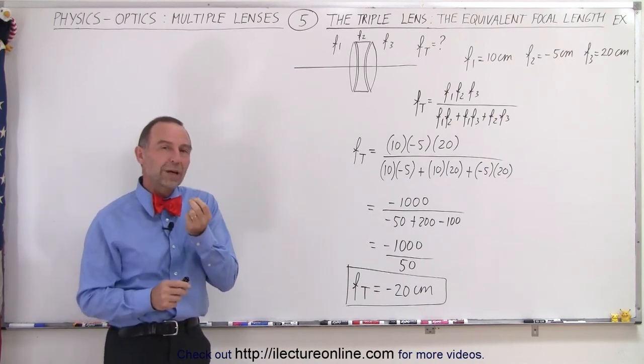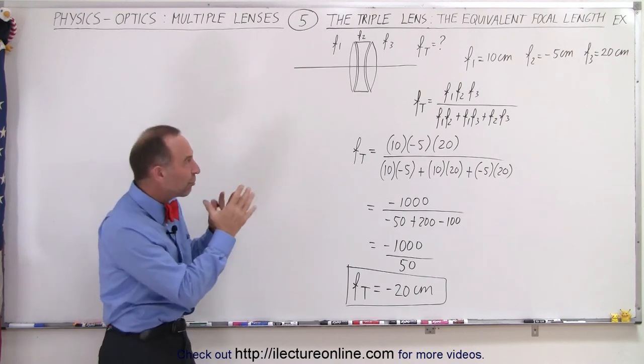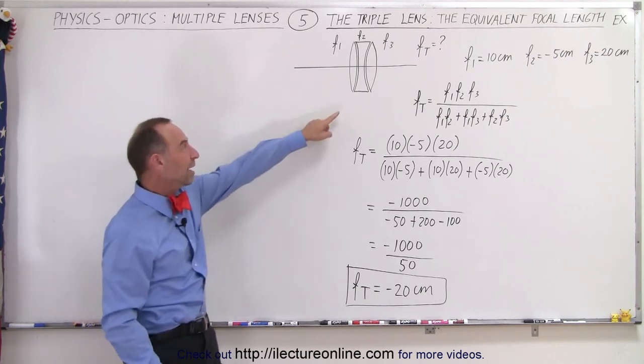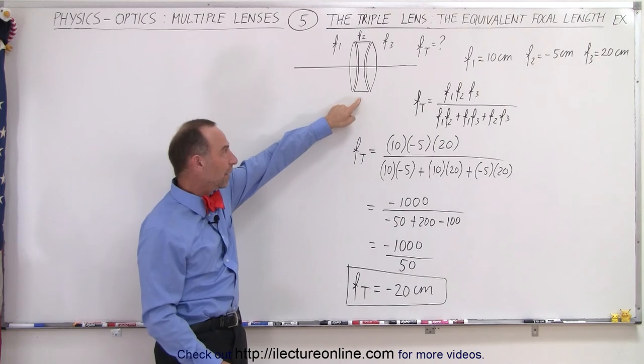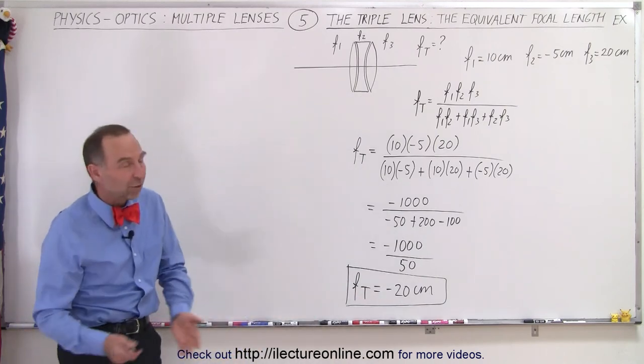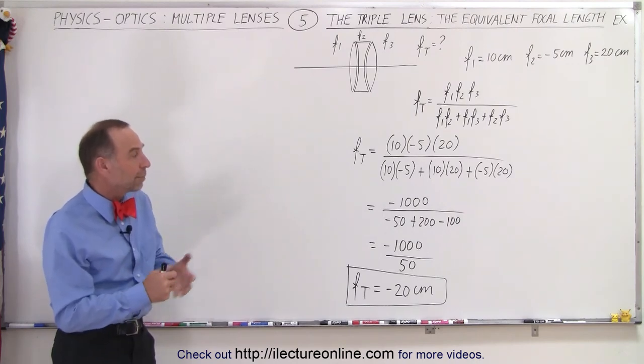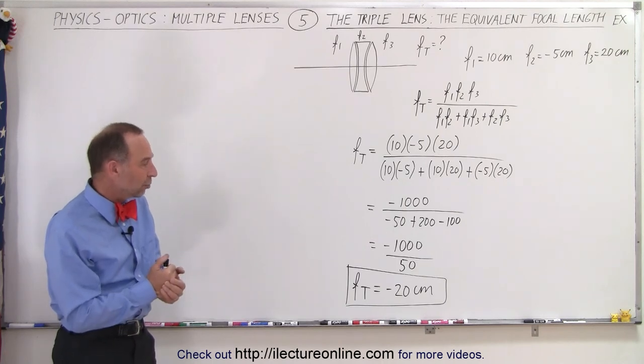you're able to reduce some of the aberrations that you could have or some of the misalignment or the misfocusing when you get away from the center part of the lens. Usually when you have multi-lens systems, you have a more clear picture and a better resolution than if you have a single lens with the same focal length. That's sometimes why they put multi-lens systems in particular cameras or things like where you need these lenses used.